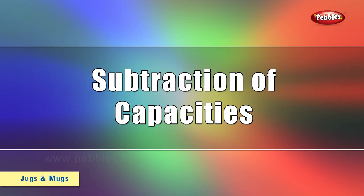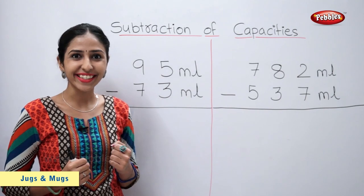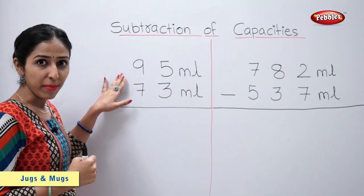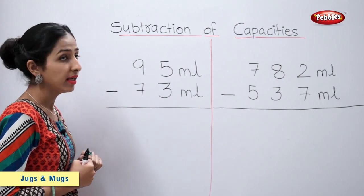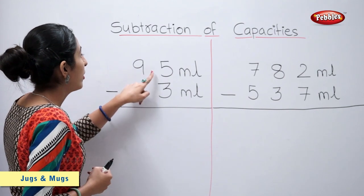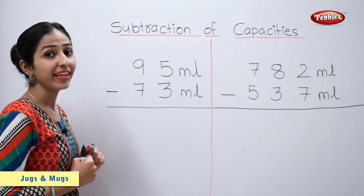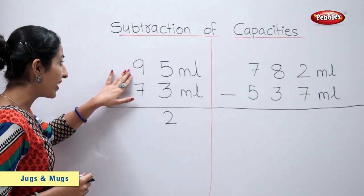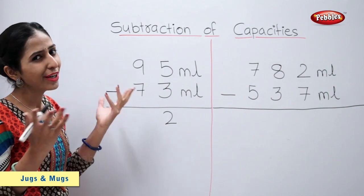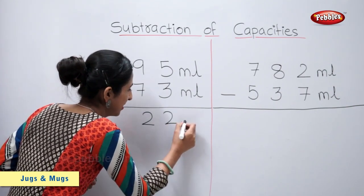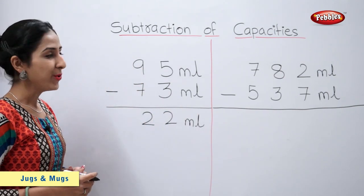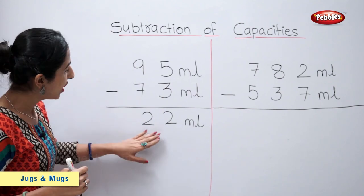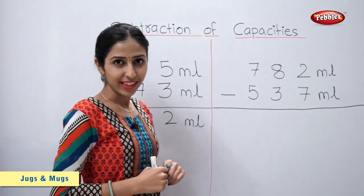Subtraction of capacities. Let's solve a few examples. 95 ml minus 73 ml is equal to how much? 5 minus 3 is equal to 2. 9 minus 7 is equal to 2. So, 95 ml minus 73 ml is equal to 22 ml.